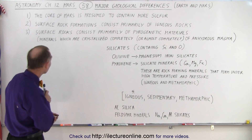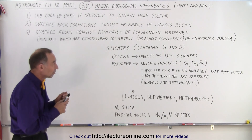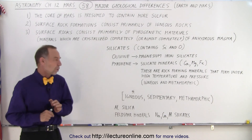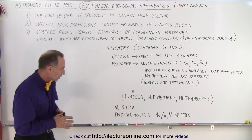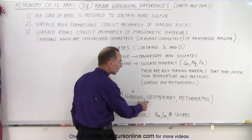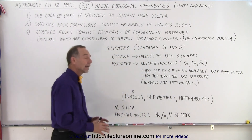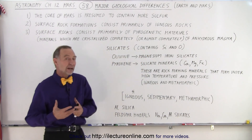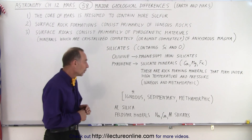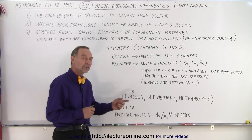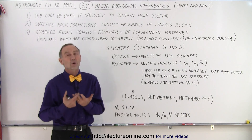Also what's unusual is that the surface rock formations consist primarily of igneous rocks. Now notice we have three different kinds of rocks: igneous rocks, sedimentary rocks, and metamorphic rocks. On Earth we find all three of them in relative abundance, but on Mars most of the rocks found are igneous type — in other words, they had a volcanic origin.